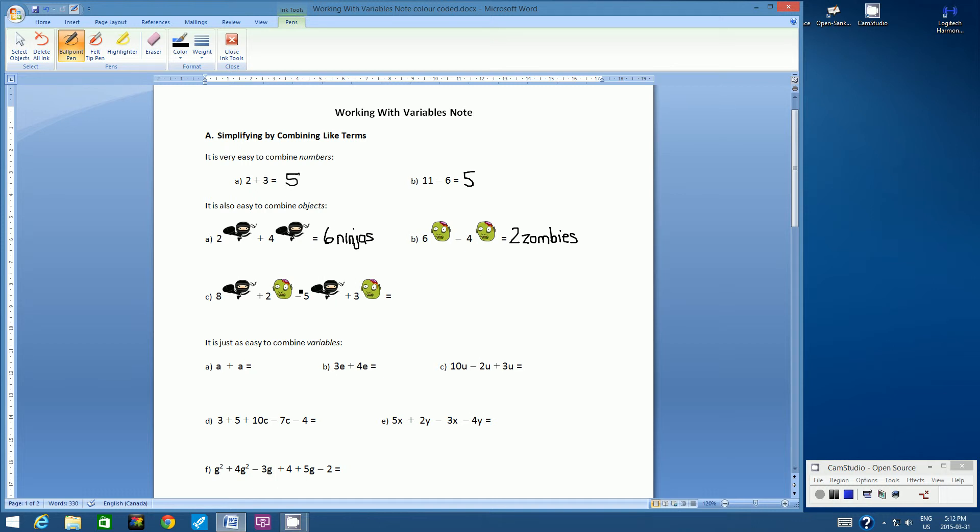Now, let's go to an expression that's a little more complicated. We have 8 ninjas plus 2 zombies subtract 5 ninjas plus 3 zombies. So what you want to do is, you want to look for things that are similar.